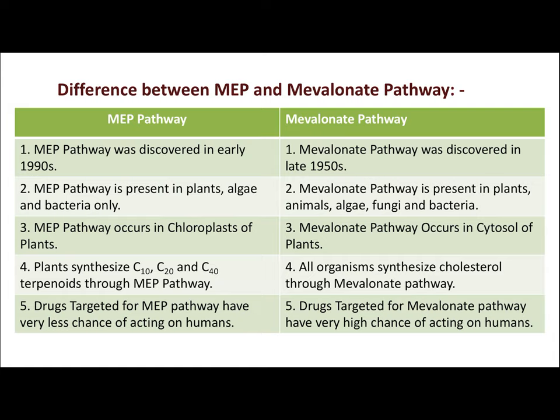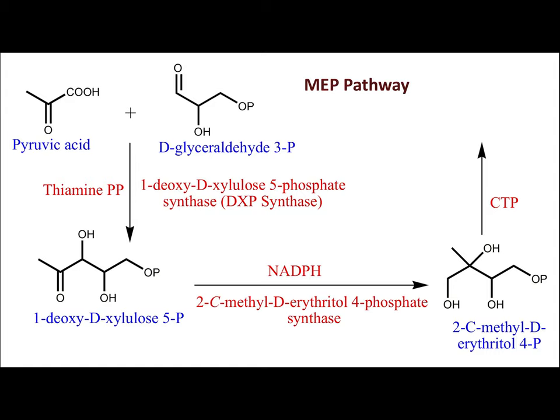One drug that targets the MEP pathway is fosmidomycin. The precursors for the MEP pathway are pyruvic acid and D-glyceraldehyde 3-phosphate: two carbons come from pyruvic acid and three carbons come from D-glyceraldehyde 3-phosphate. The IPP and DMAPP synthesized at the end of this pathway are five-carbon units.